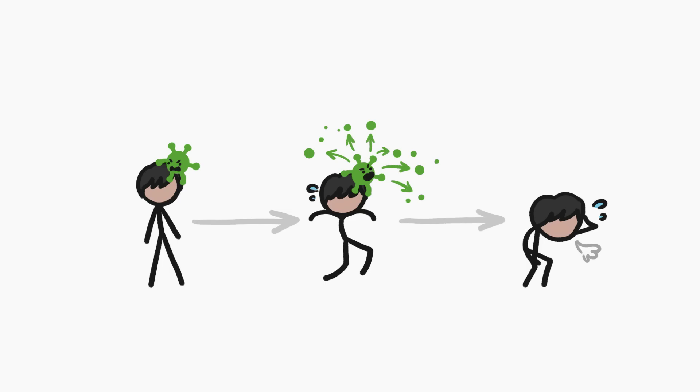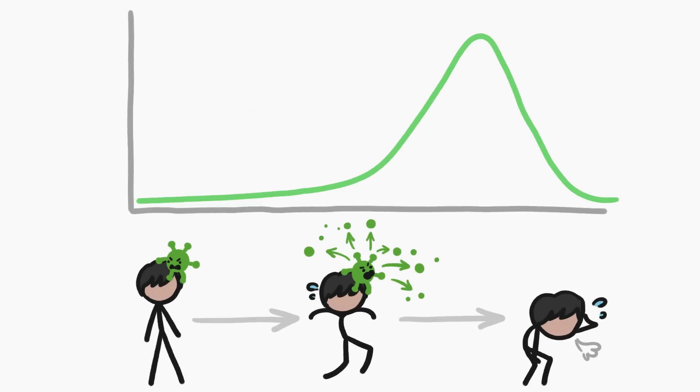And the people they've infected stop infecting other people too. This type of viral spread creates a curve, like this graph of reported cases of pandemic flu in Mexico in 2009.